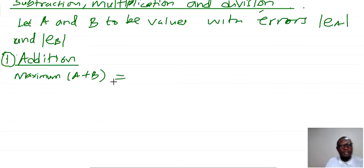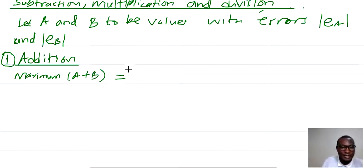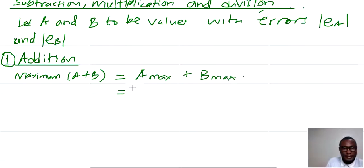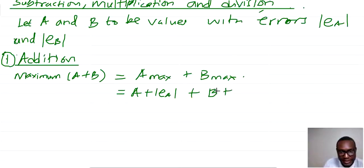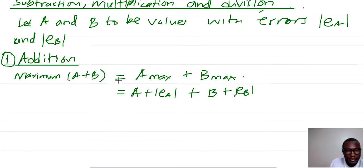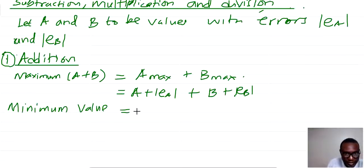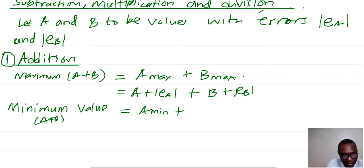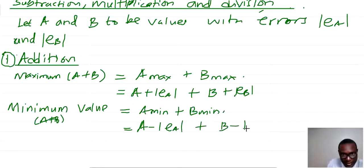To get the maximum value of A plus B, we maximize A and we also maximize B, giving us A max plus B max. Maximizing A means A plus EA, and maximizing B means B plus EB, so maximum of A plus B equals A plus B plus EA plus EB. For the minimum value of A plus B, we minimize both: A minus EA plus B minus EB.